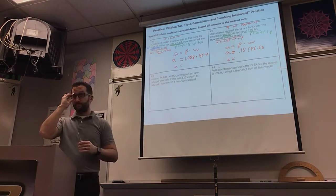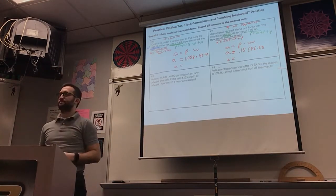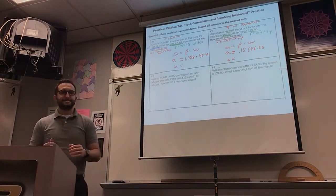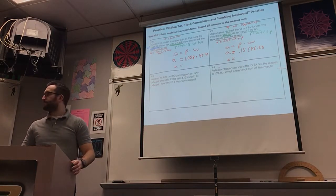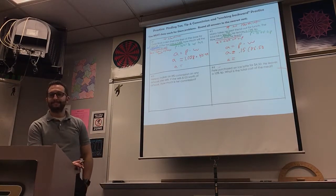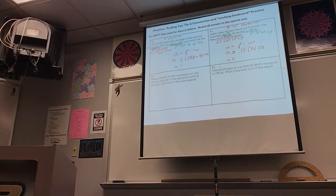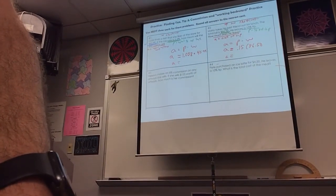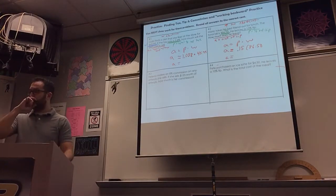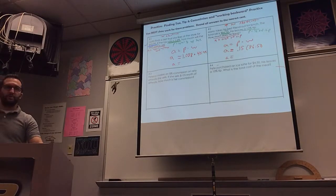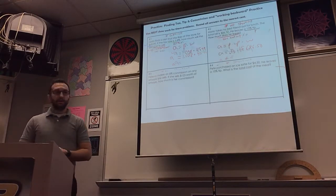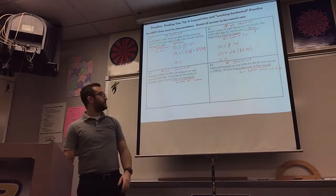With your partner, I want you on number 3 and number 4 to decide which of these two you can and should use the shortcut method on, and which of these two you can't. Talk to your partner. You have 20 seconds. On number 3, you can't. On number 4, you can.